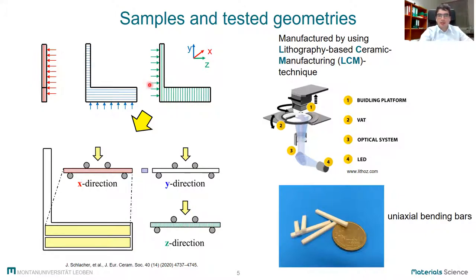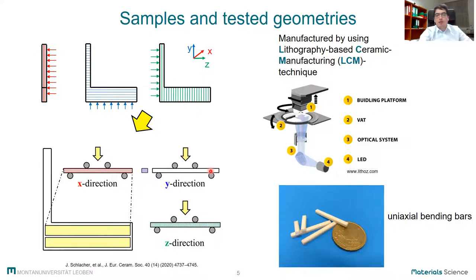For instance, in z direction, y and x. In order to test the samples in uniaxial bending, standard bend bars were cut out of the sample geometry. It is important to mention that the loading direction for the applied stress field must be related to those different printing directions x, y, and z.